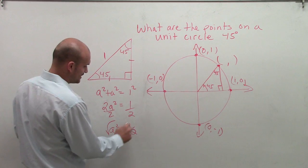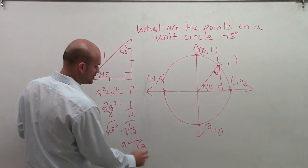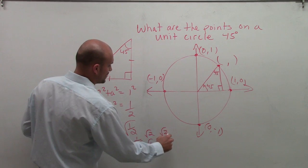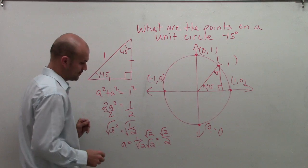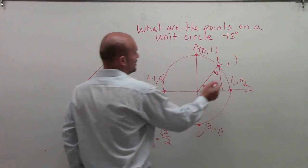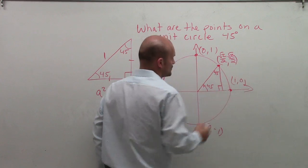To solve for a, I take the square root: a equals 1 over the square root of 2. Rationalizing the denominator, I get square root of 2 divided by 2. Therefore, the distance of both x and y is square root of 2 over 2.